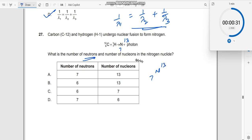Now what is being asked? Number of neutrons and number of nucleons. Number of nucleons clearly is 13. So 13. So this and this goes away.